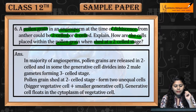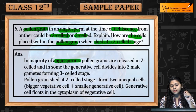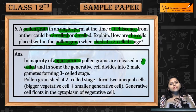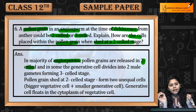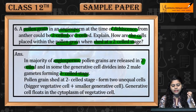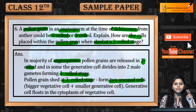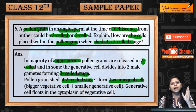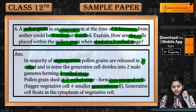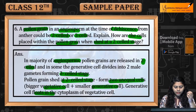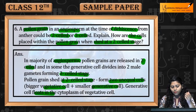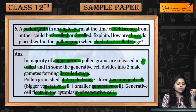Sabse pahle, angiosperms mein pollen grains release karte hain 2-celled mein, and in some cases, joh generative cells hai, wo divide karte hain into 2 male gametes and form karte hain 3-celled stage. Pollen grain shed karte hain 2-celled stage mein, form karte hain 2 unequal cells, jin mein se one bigger one is vegetative and smaller one is generative cell. Generative cells float karte hain in the cytoplasm of vegetative cell.